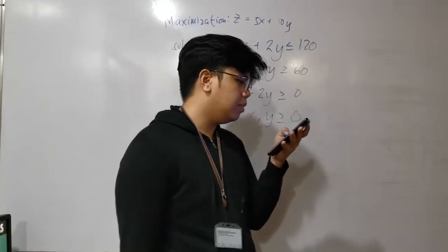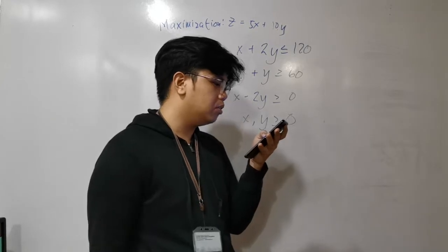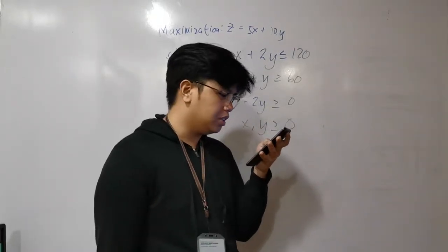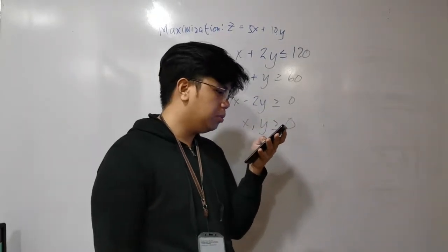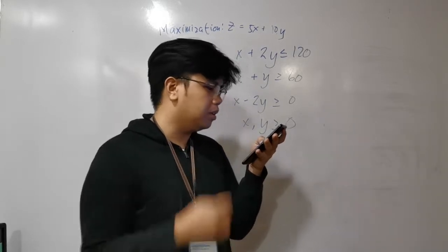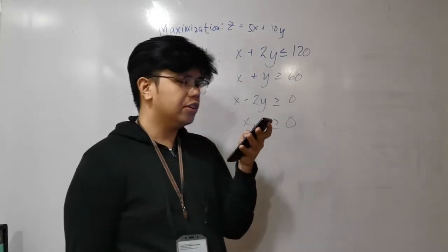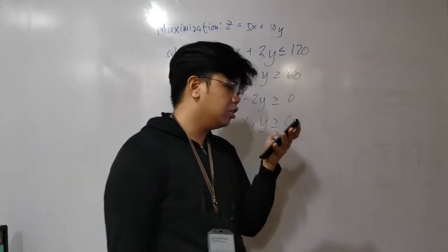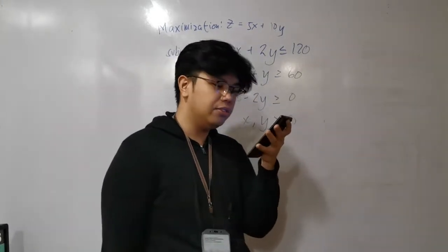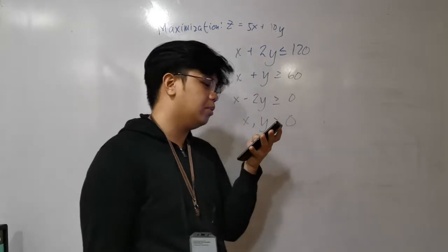In the case of an assignment problem, it is likely to have two or additional ways to remove uncovered numbers of zero. This situation shows multiple optimal solutions with the identical optimal value of the objective function. Therefore, it can be said that the total cost or total profit will remain identical for different sets of allocations in an assignment problem.